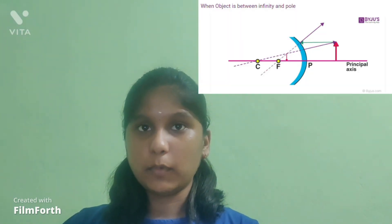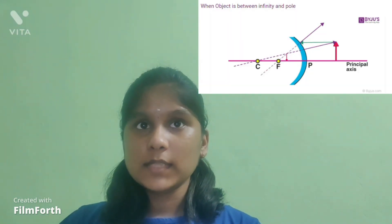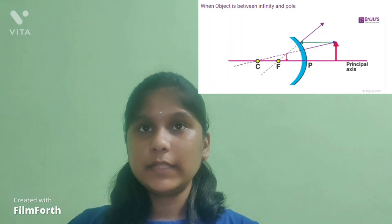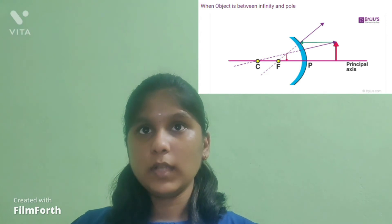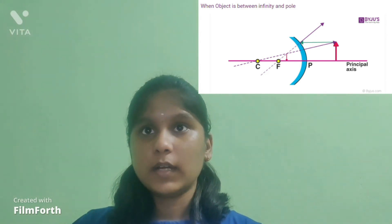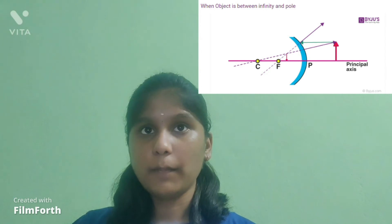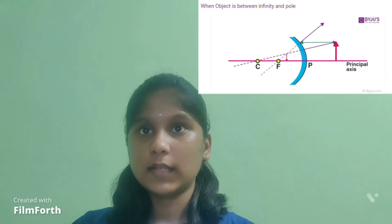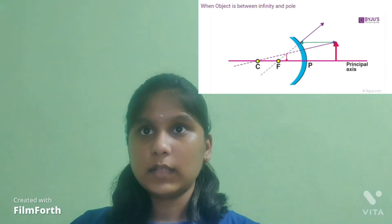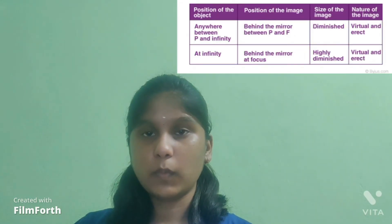When an object is between infinity and the pole of a convex mirror, a diminished, virtual and erect image is formed between the pole and the focus, that is behind the mirror.